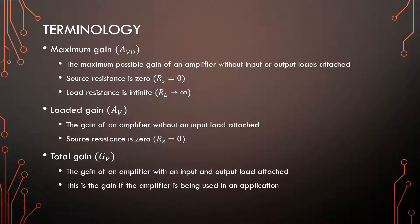Then the total gain, GV, is when there is source loading and a load on the output of the amplifier. So when you are using an amplifier in a certain application, you will consider the input loading as well. So those are the three gains possible.